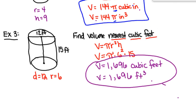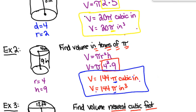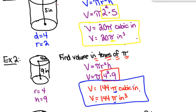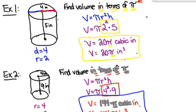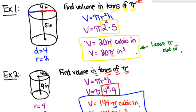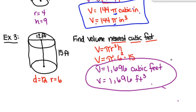Here's the key distinction: when the problem says 'in terms of pi,' leave the pi out of the calculator and keep it in your answer. When it says 'round to the nearest something,' put pi into the calculator.